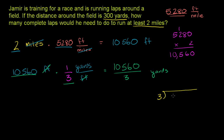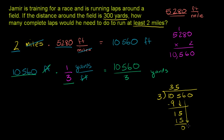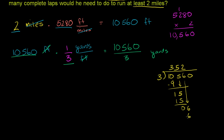Let's figure out what that is. 3 goes into 10,560: it doesn't go into 1; it goes into 10 three times — 3 times 3 is 9, subtract, we get 1. Bring down the 5 to get 15; 3 goes into 15 five times — 5 times 3 is 15, no remainder. Bring down the 6; 3 goes into 6 two times — 2 times 3 is 6, no remainder. Bring down the last 0; 3 goes into 0 zero times. So 2 miles is equivalent to 3,520 yards.